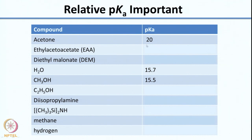You already have the pKa values of acetone, water, and methanol. Based on the pKa of acetone, if you write the structures of ethyl acetoacetate and diethylmalonate, what do you expect the pKa's to be? Will they be lower than acetone or higher? Also, between these two, which would be more acidic? I want you to write the structures and compare the pKa of the hydrogen alpha to the carbonyl group.